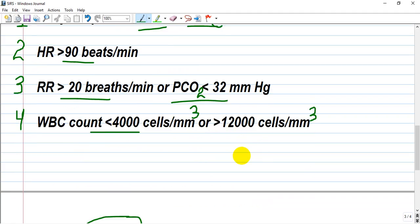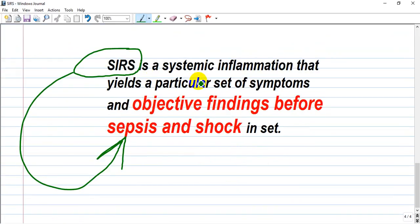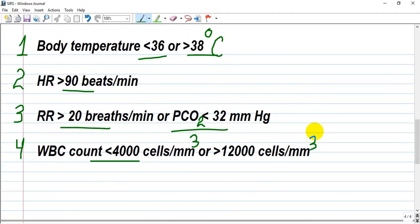Generally speaking, SIRS is a systemic inflammatory response that yields a particular set of symptoms and objective findings before sepsis and shock set in. SIRS is part of an increasing scale where SIRS is here, then sepsis, then severe sepsis, and finally shock.